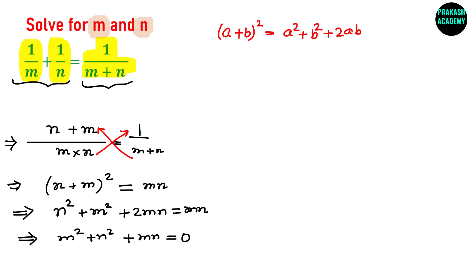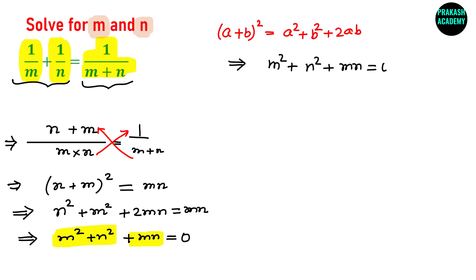From this expression I cannot say anything directly, so I have to convert it into a sum of squares form — because if a sum of squares equals 0, we can compare each term. I have M square plus N square here. To get a clean sum-of-squares form, I will multiply the entire equation by 2, giving 2M square plus 2N square plus 2MN equals 0.